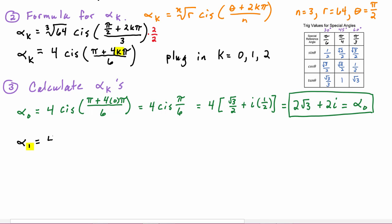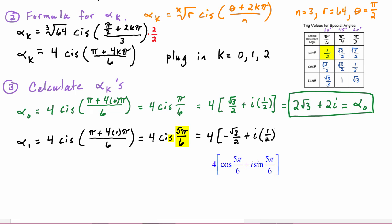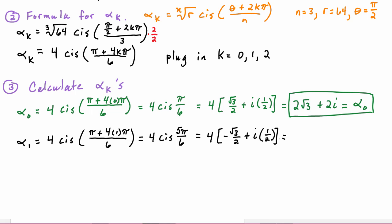α₁ will be 4 cis((π + 4(1)π)/6), which is equal to 4 cis(5π/6), which is equal to 4 times the quantity - cosine of 5π/6 is -√3/2 plus i times the sine of 5π/6, which is positive 1/2. Distributing that 4, we get -2√3 + 2i, and that is α₁.